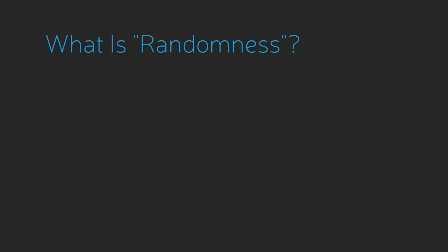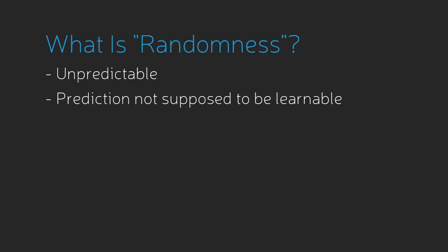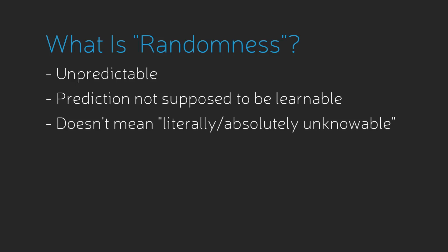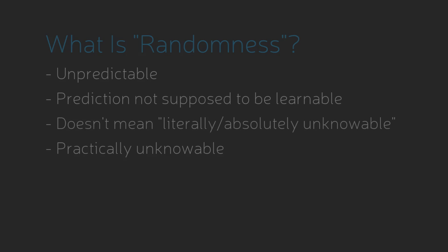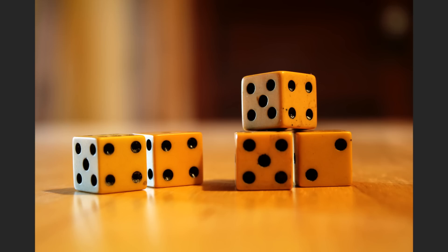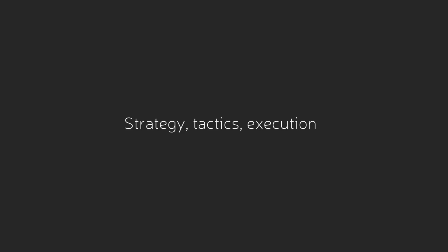In games, randomness is a label that we put on game variables which we not only can't predict, but which we are never intended to be able to predict. Randomness does not mean literally unknowable. Randomness is a shorthand for things in games which are both practically unknowable and that are also never meant to be known. When we roll a die, we're not supposed to be able to even partially figure out how it's going to fall. This stands in contrast to other game elements which we are meant to gradually learn and understand and master over time.